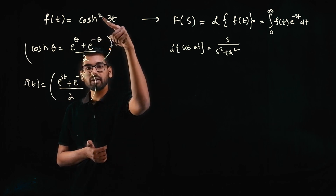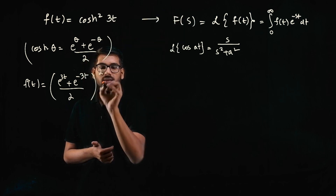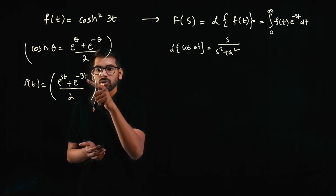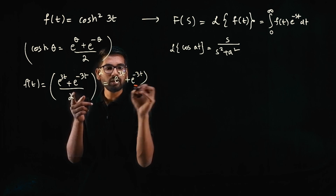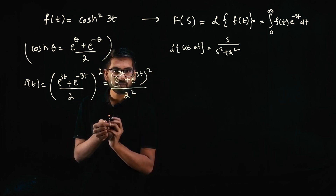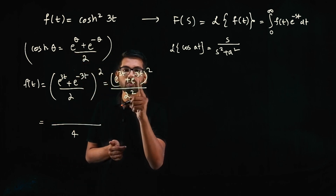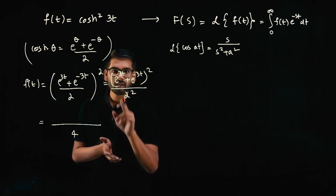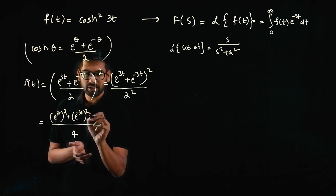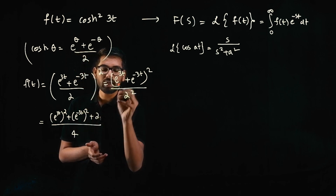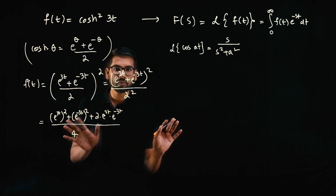Squaring the expression: (a/b)² = a²/b², so the denominator becomes 4. In the numerator we expand (a+b)² = a² + b² + 2ab. So we get: e^(3t) whole squared + e^(−3t) whole squared + 2·e^(3t)·e^(−3t), all over 4.